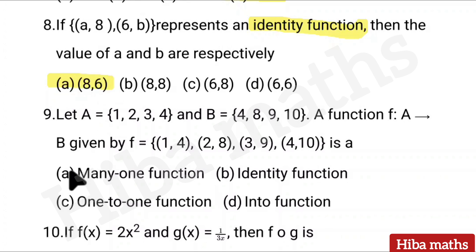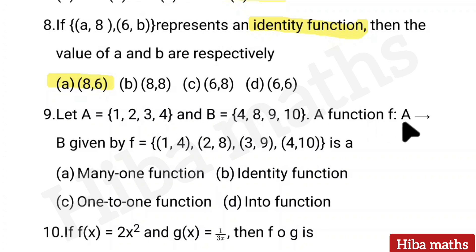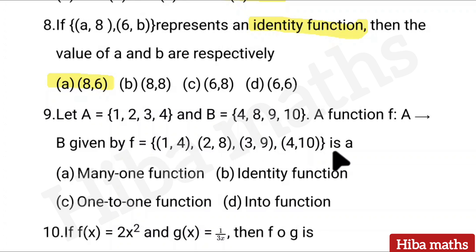Ninth question: Let A equal to {1, 2, 3, 4} and B equal to {4, 8, 9, 10}. The function f: A → B given by f = {(1,4), (2,8), (3,9), (4,10)} is a — many-to-one function, identity function, one-to-one function, or into function.